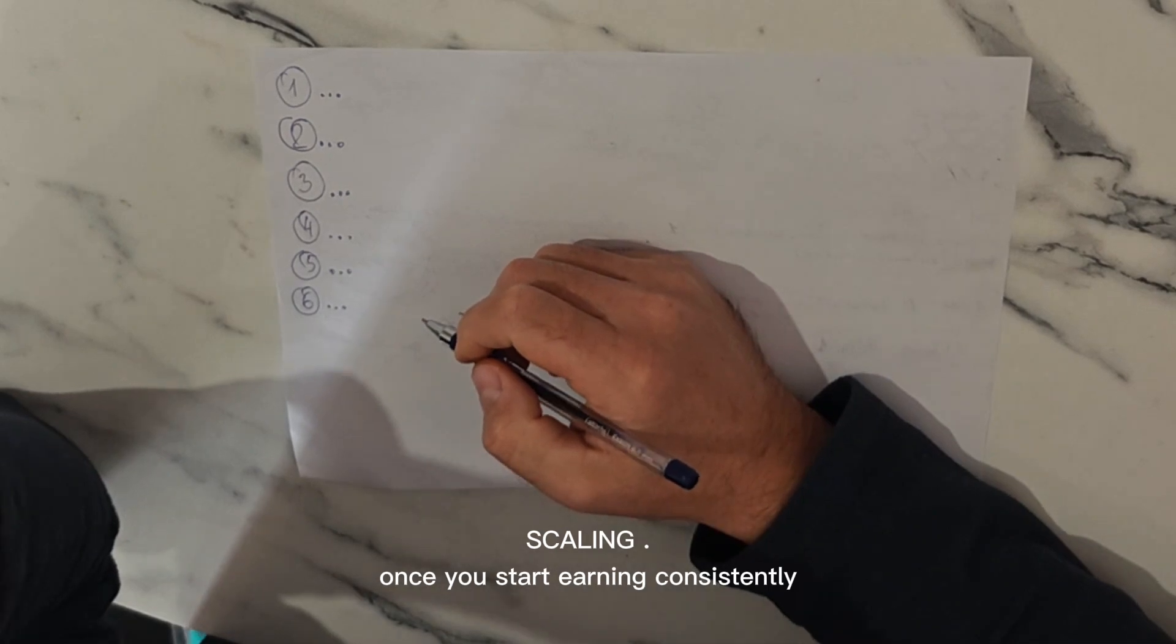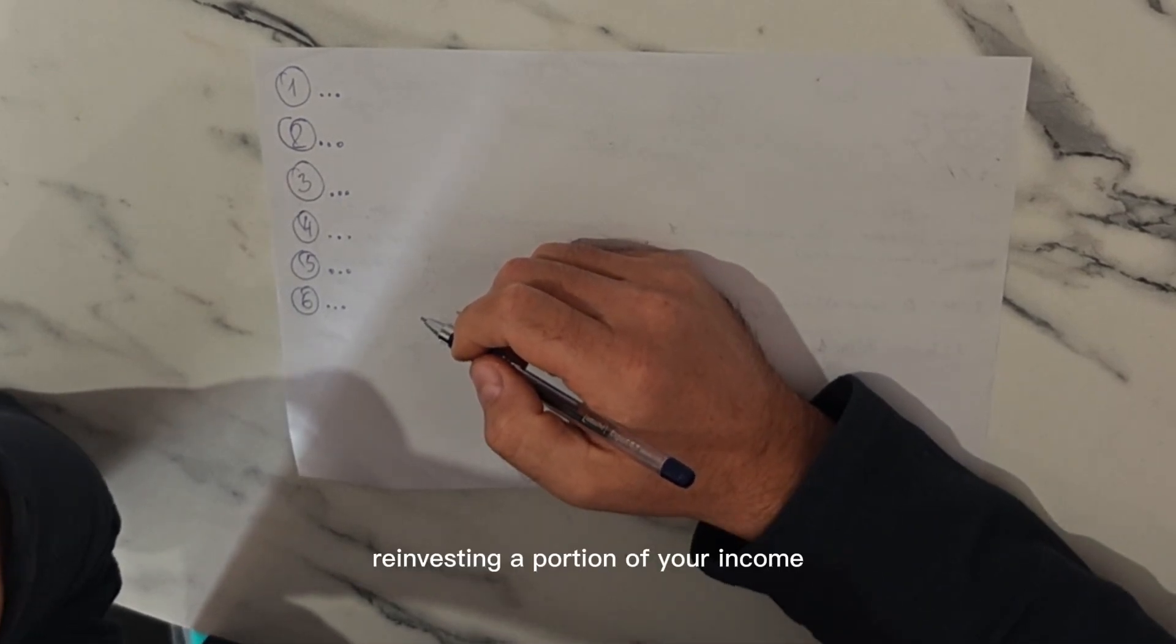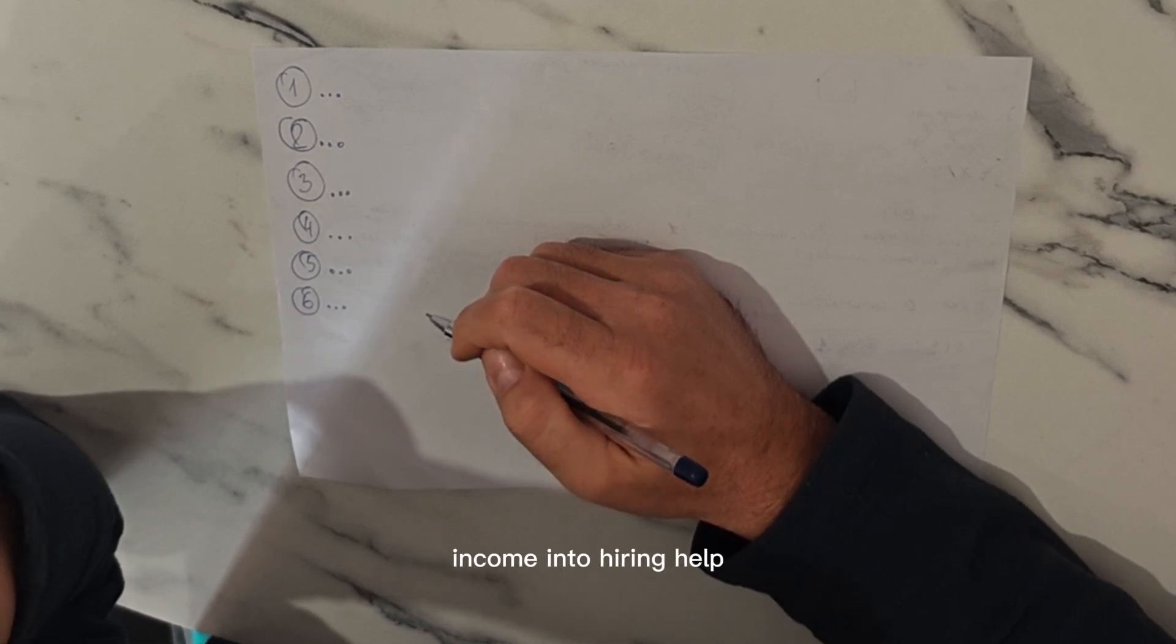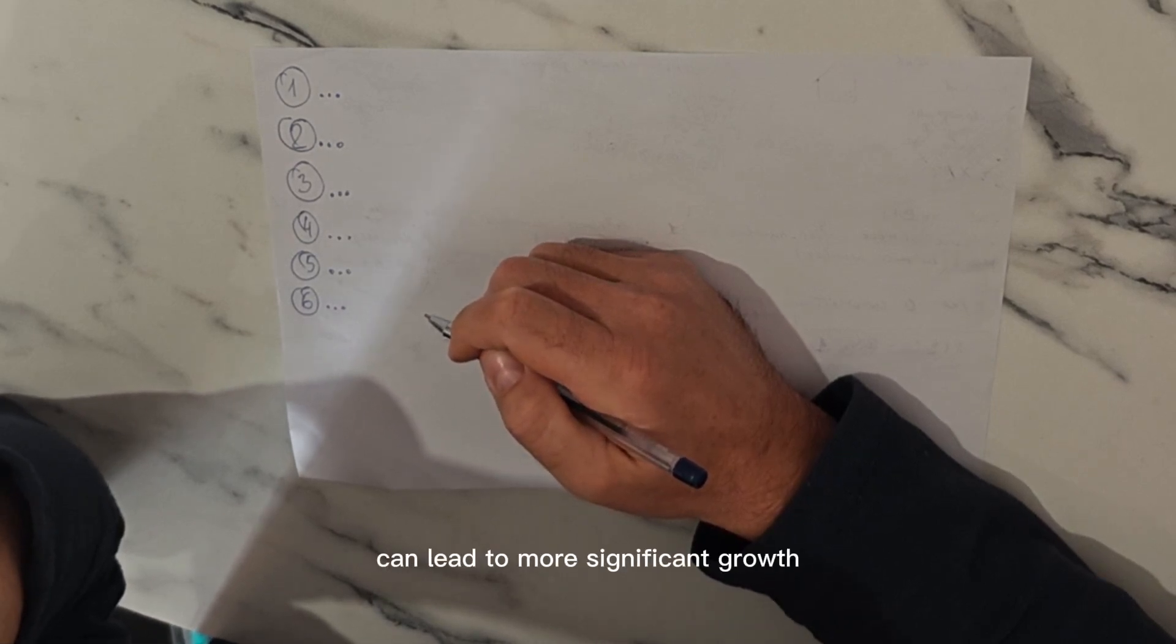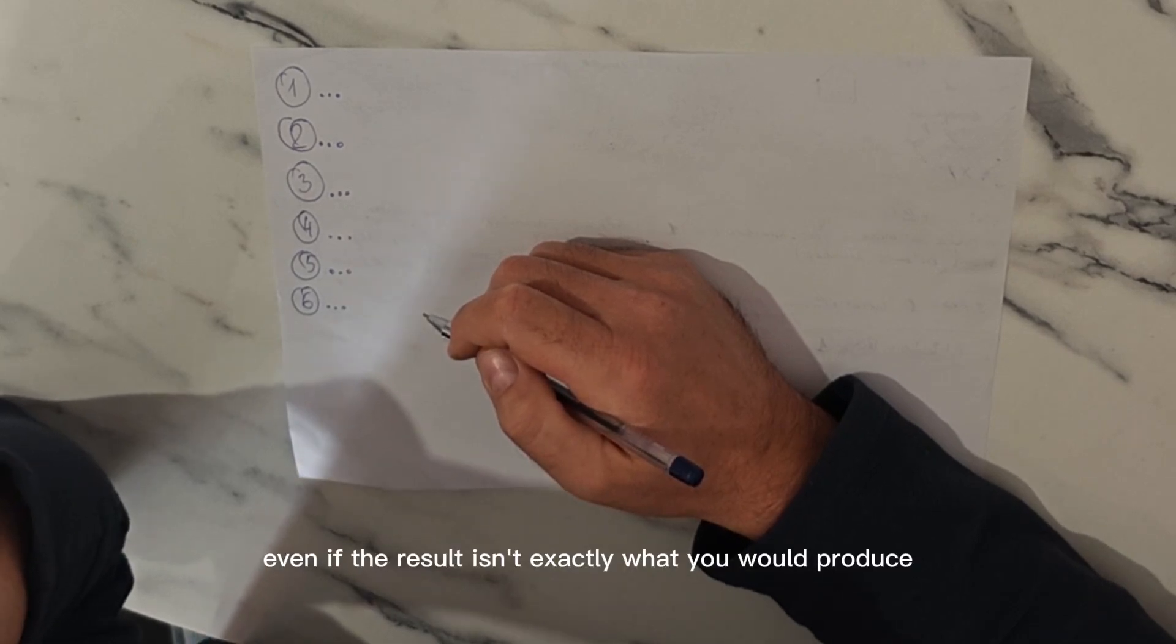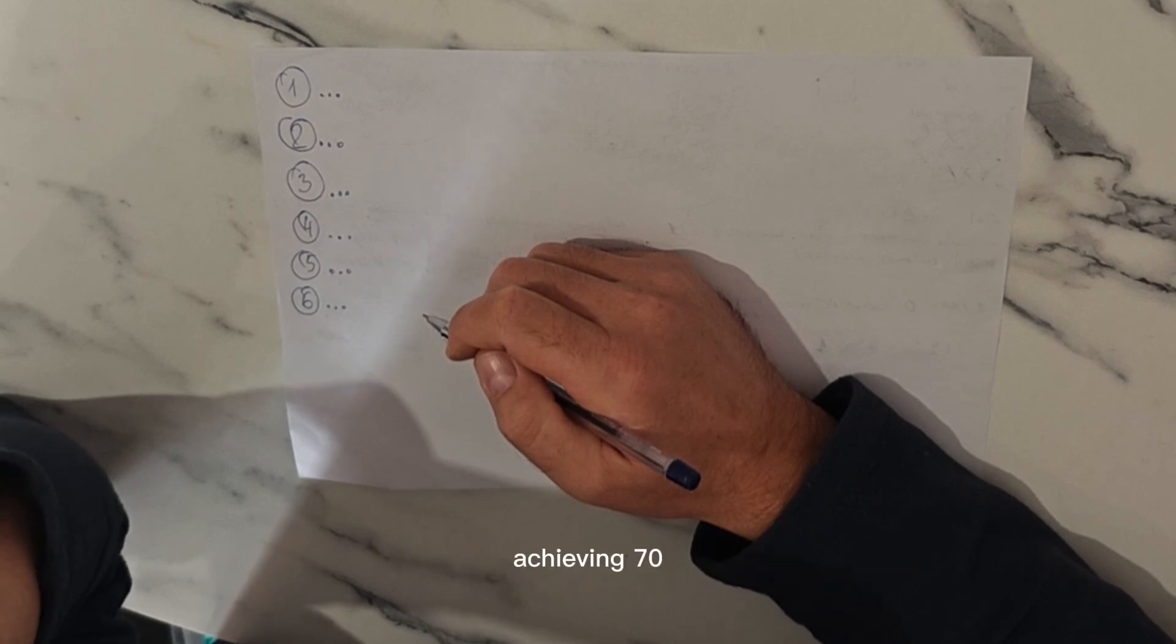Six - Scaling: Once you start earning consistently, reinvesting a portion of your income into hiring help can lead to more significant growth, even if the result isn't exactly what you would produce.